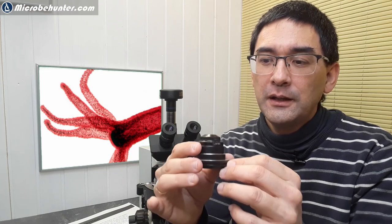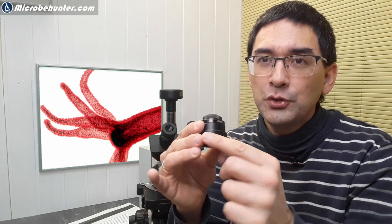So first of all, when you move the condenser aperture diaphragm left and right, the first thing that people are going to see is that if you move it on one side, the image is going to be darker, and if you move it over to the other side, then the image is going to be brighter.